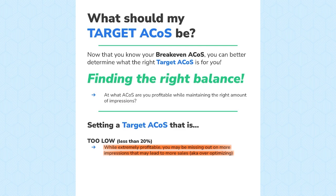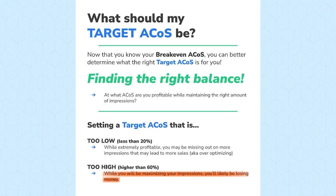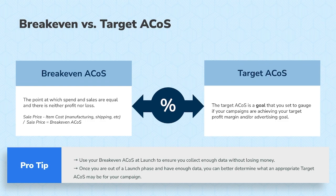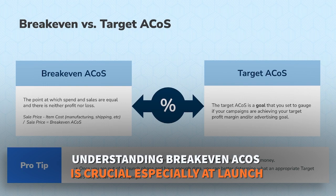If you go too high — say above 60% — you're maximizing all your spend and all your impressions, but you'll likely be losing money. So it's important to find that right balance between too low and too high of an ACoS target. This is why it's important to understand break-even ACoS, especially at launch, to understand the difference between the two.